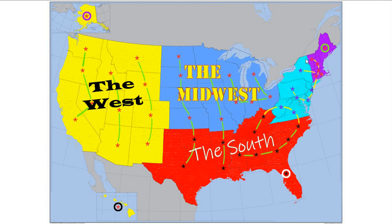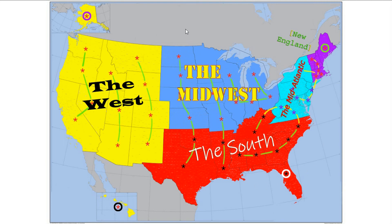Moving to the next color — this is the Middle Atlantic. I had trouble with this region because different sources tell different things about it. Some divide it into the northeast and the southeast, and some sources include these states in the South for some reason. But I keep it like this, as the Mid-Atlantic region. And then finally we got New England.